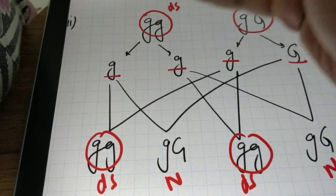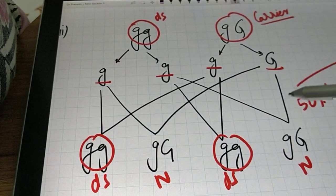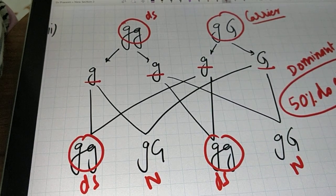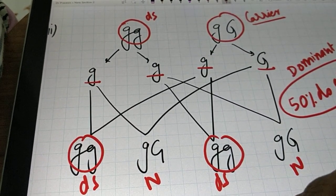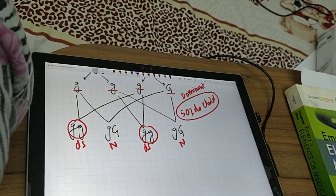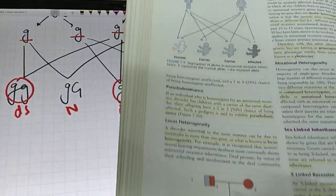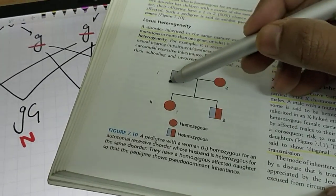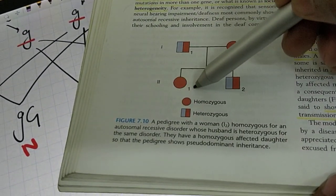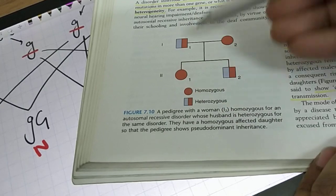This whole scenario — one parent diseased and one parent carrier, showing 50% diseased children — quite looks like a dominant condition, doesn't it? It looks dominant but it is not. This type of recessive condition which looks like a dominant condition is called pseudo-dominance. The book Emery's Elements of Medical Genetics defines pseudo-dominance as: one parent is a carrier and one parent is diseased, giving rise to children of whom 50% are diseased and 50% are carriers.